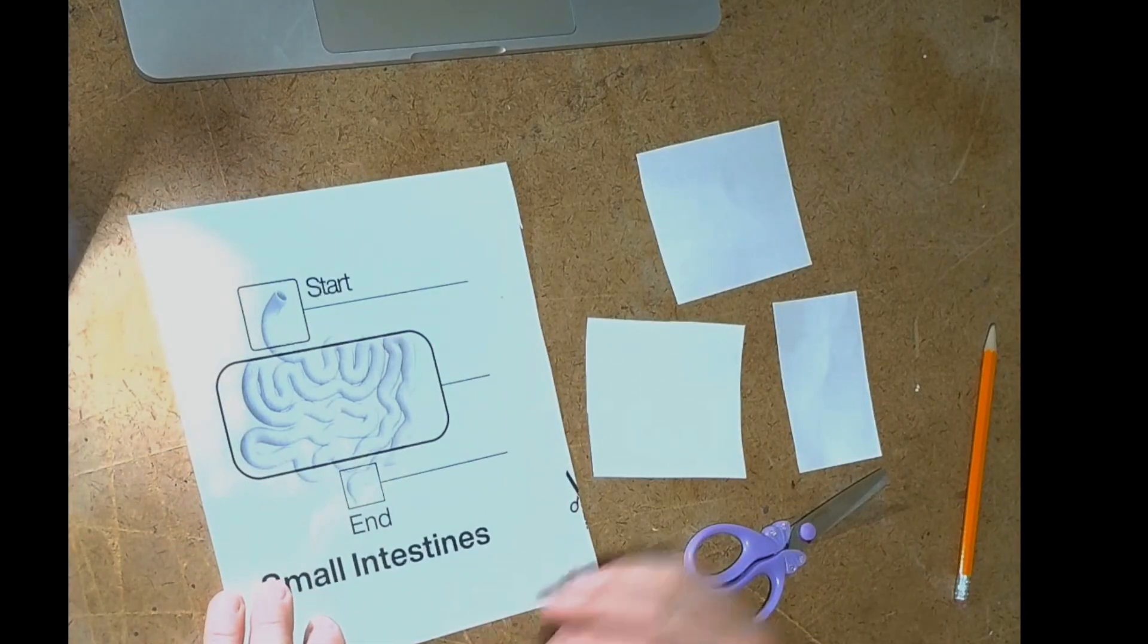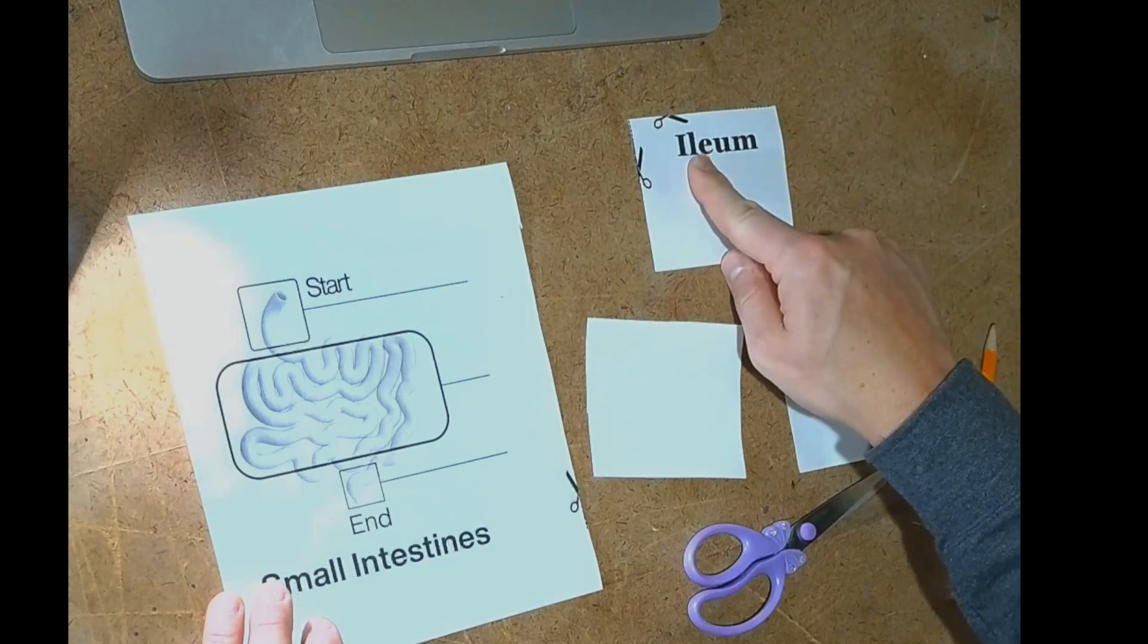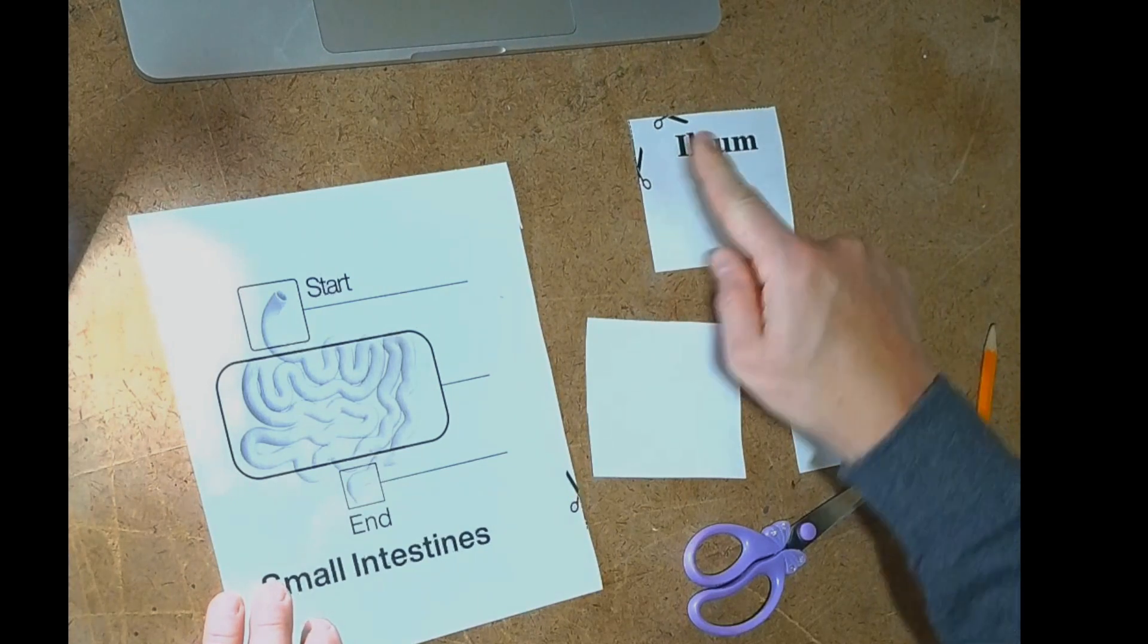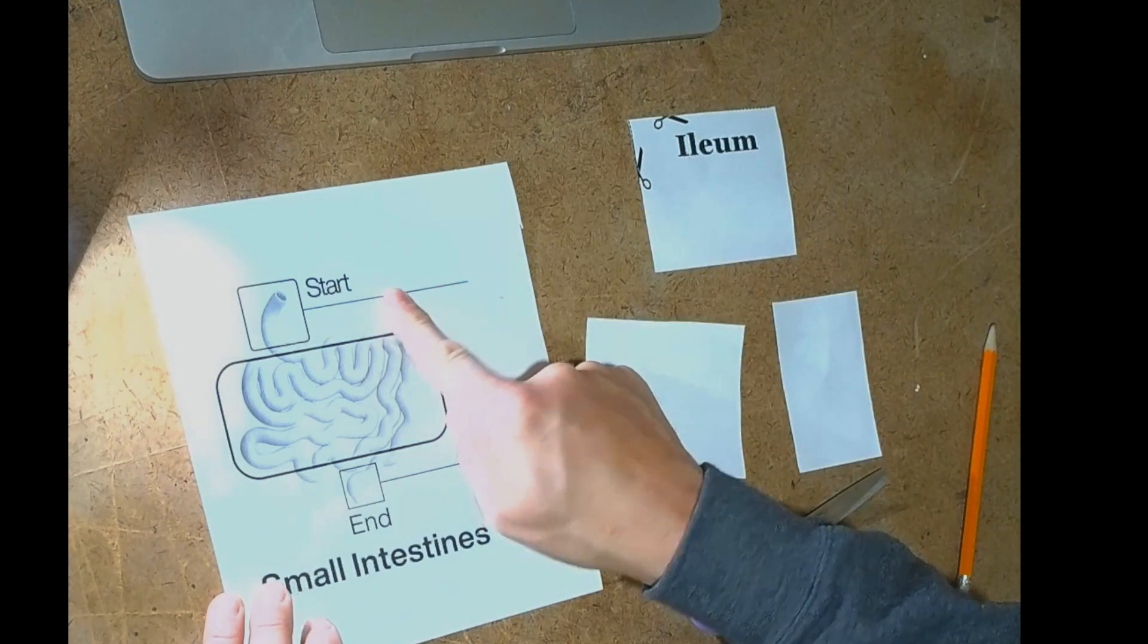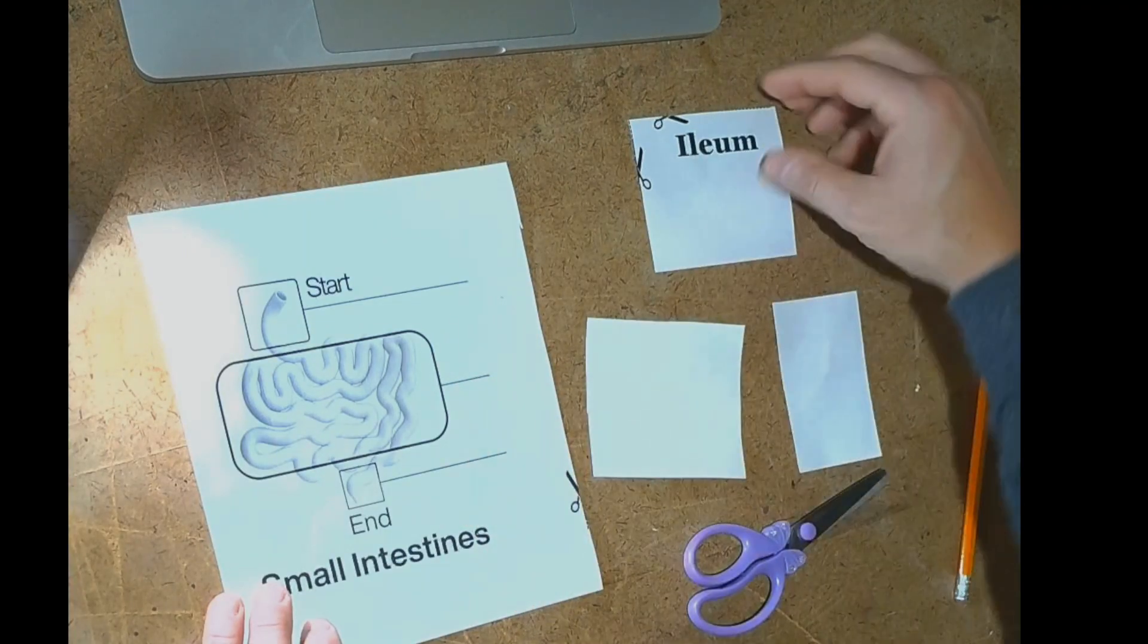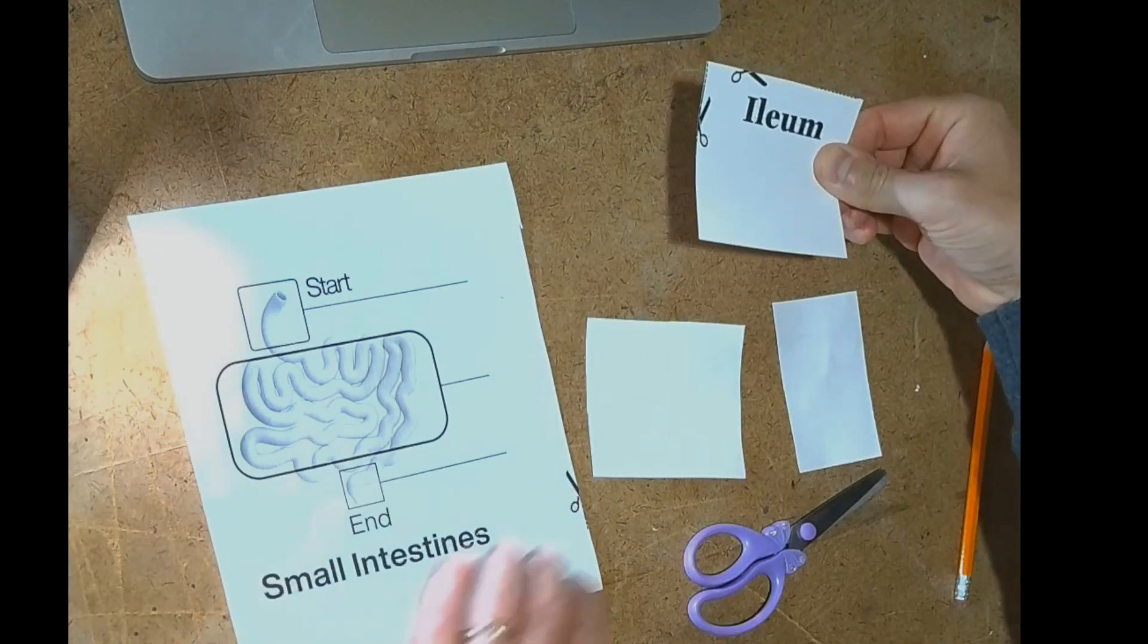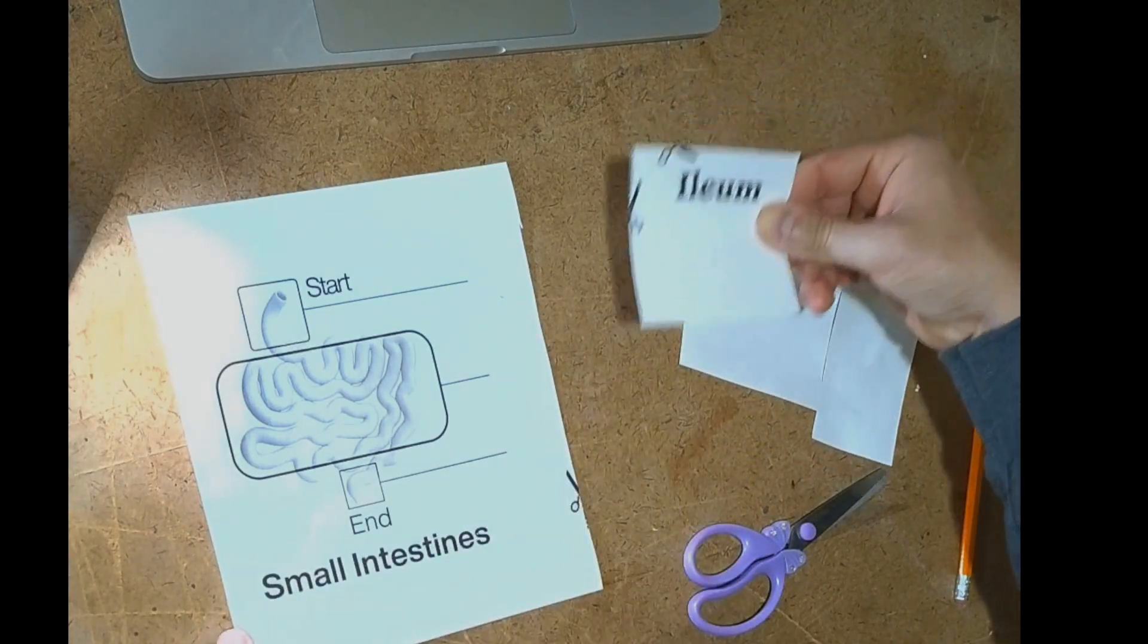All right, we're going to go ahead and turn this first one over and it's the ileum. Does the ileum start, middle, or end the small intestines? The ileum is going to end the small intestines. It's going to link up to large intestine.